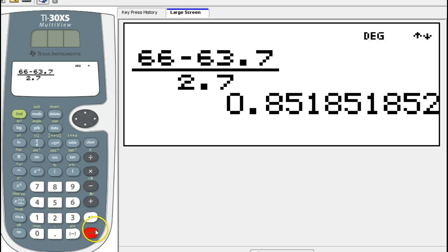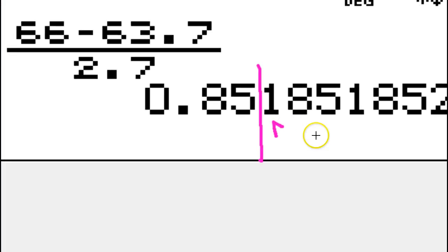This will be our z-score. We need to round this to two decimal places. I want to really cut this off here. We'll have to be very careful. Rounding is very important. Looking at the next number over, if that is 5 or greater, then we need to round this one up.